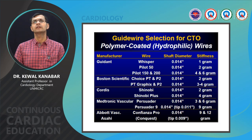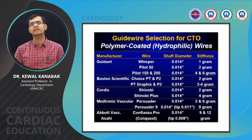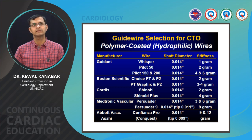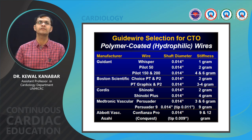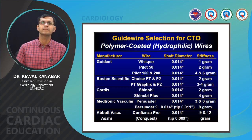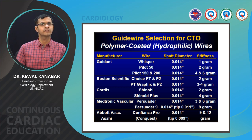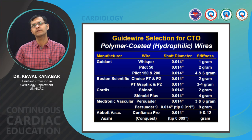Polymer coated hydrophilic wires include the Whisper series — Whisper regular, Whisper medium support, and Whisper extra support — as well as Pilot 50, Pilot 150, and Pilot 200, and Choice PT. These are commonly used wires. For very experienced CTO operators, the Confianza Pro wire with very high tip load of 9 and 12 grams is available.